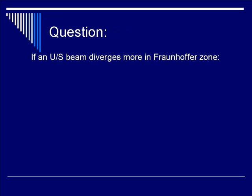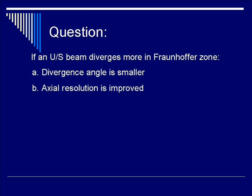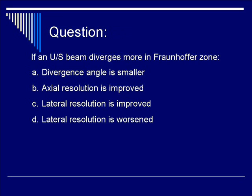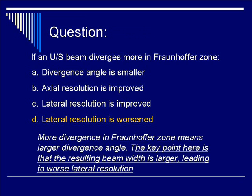Let's do a question to test your knowledge. If an ultrasound beam diverges more in the Fraunhofer zone, is it A, divergence angle is smaller? Is it B, axial resolution is improved? Is it C, lateral resolution is improved? Or is it D, lateral resolution is worsened? The correct response is D — lateral resolution is worsened. Remember, divergence occurring in the Fraunhofer zone implies an increased divergence angle. The key point is that the resulting beam width becomes larger, leading to worse lateral resolution.